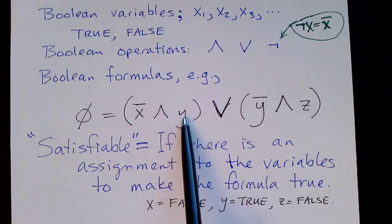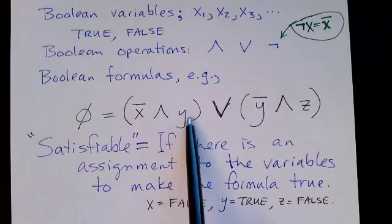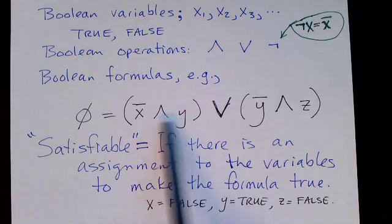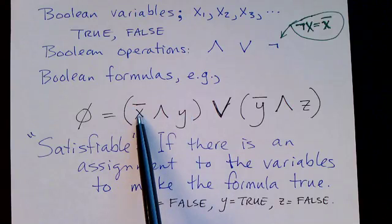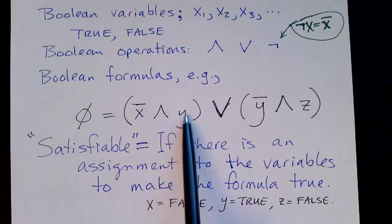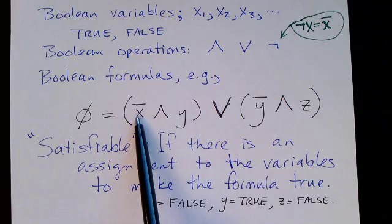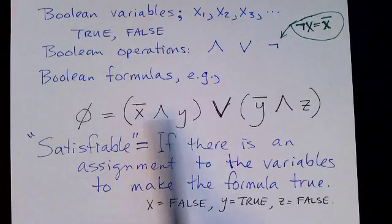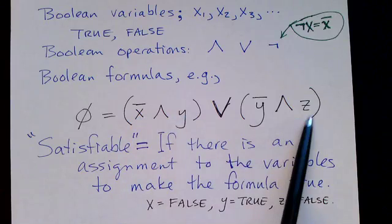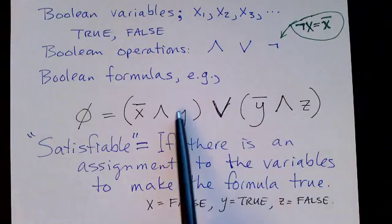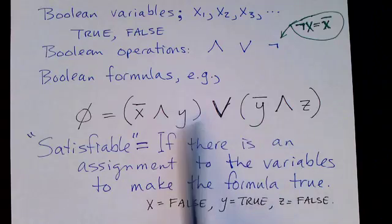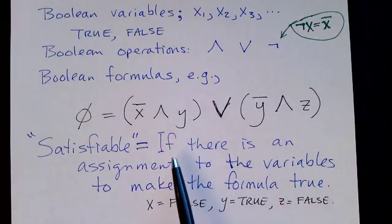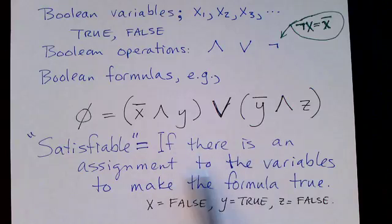If we assign Y to true, and both of these have to be true, because this is an AND. So we'll make Y true, and we'll make X false, which makes NOT X true. So that's an assignment. X gets false, Y gets true, and Z gets anything, let's say true. We'll make this whole formula true. So this is satisfiable.